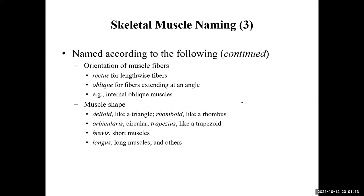The fourth way we name muscles is by the orientation of the muscle fibers themselves. For example, rectus abdominis tells us those parallel fibers run lengthwise along the axial region of the abdomen. And oblique tells us the fibers go in at an oblique angle.